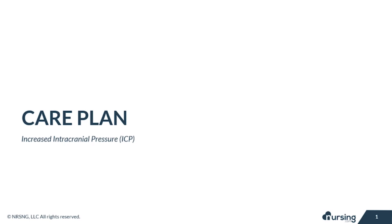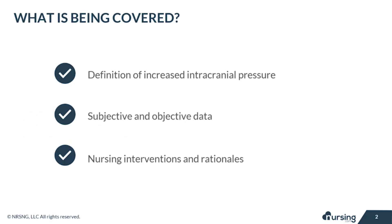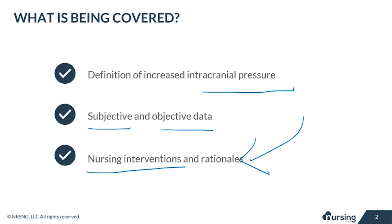In this lesson today, we're going to take a look at the care plan for increased intracranial pressure, also known as ICP. We will briefly take a look at the pathophysiology and etiology of increased ICP, as well as additional things included in an ICP care plan, like subjective and objective data that your patient may present with, as well as the necessary nursing interventions and rationales.